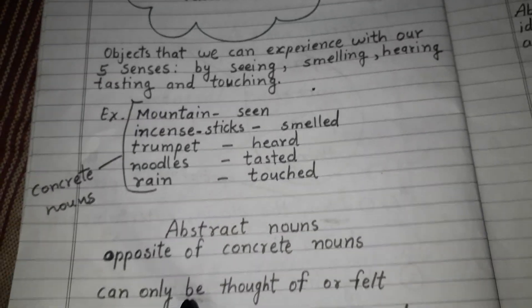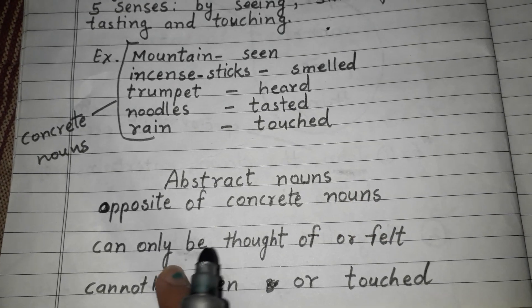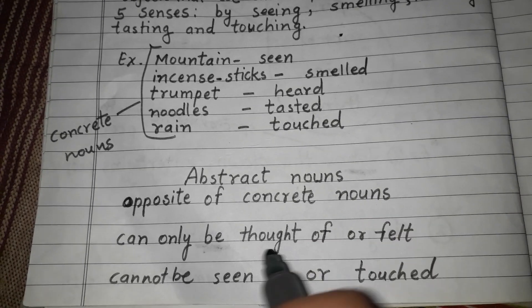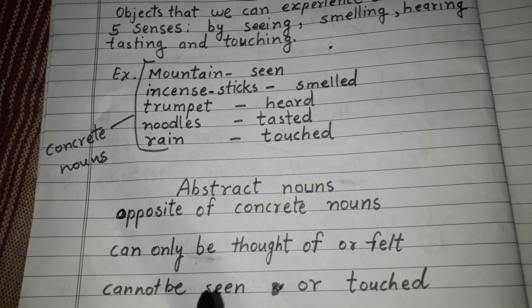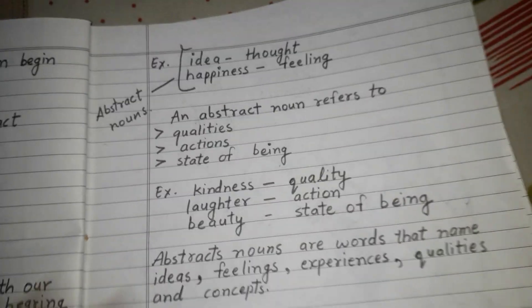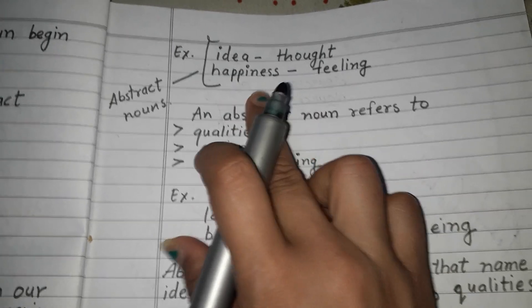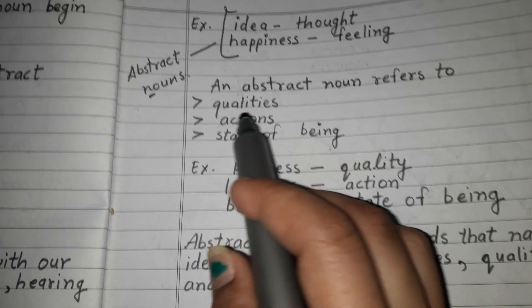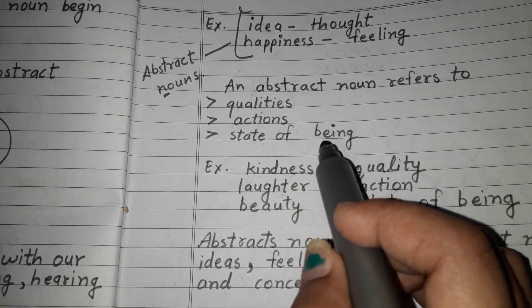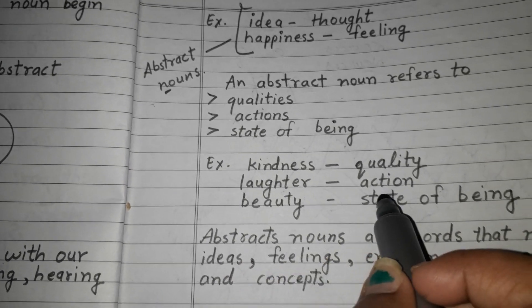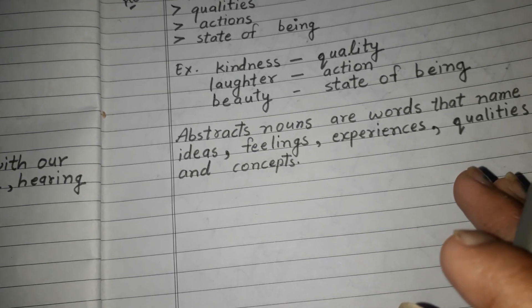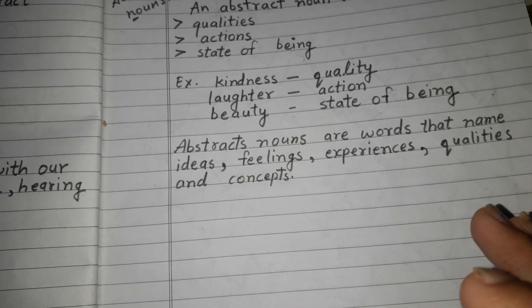Abstract nouns are the opposite of concrete nouns — they can only be thought of or felt; we cannot see or touch them. For example: idea is a thought, happiness is a feeling. Abstract nouns refer to qualities, actions, or states of being — such as kindness (a quality), laughter (an action), and beauty (a state of being). Abstract nouns name ideas, feelings, experiences, qualities, and concepts.